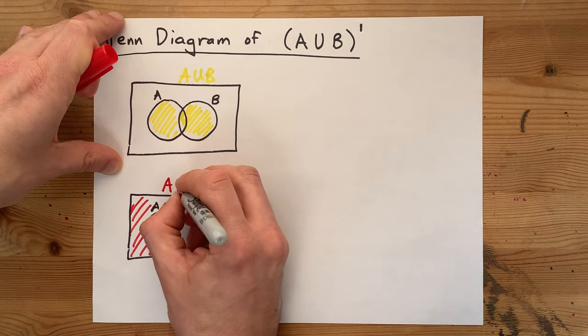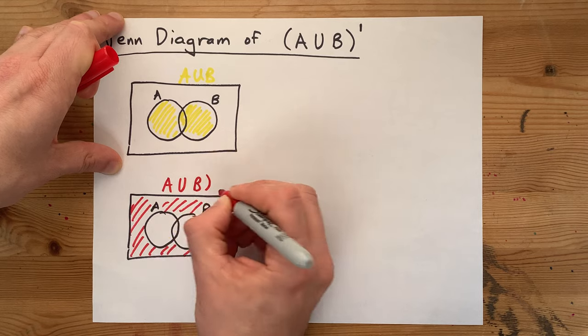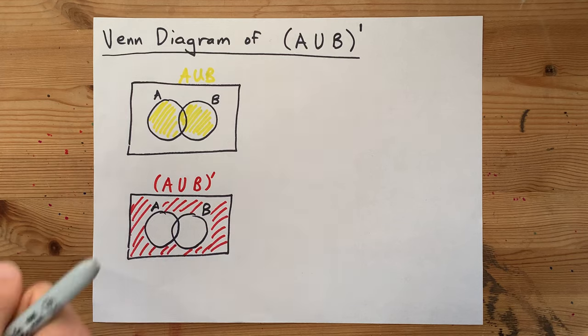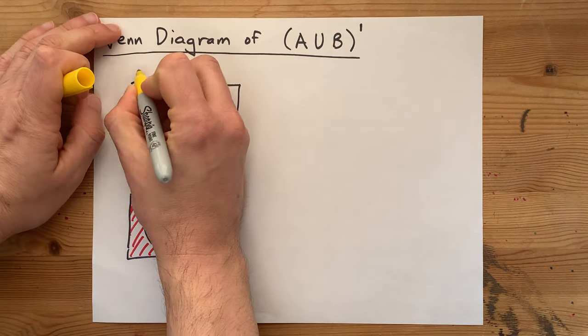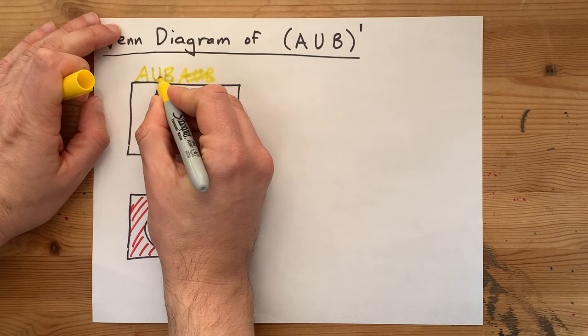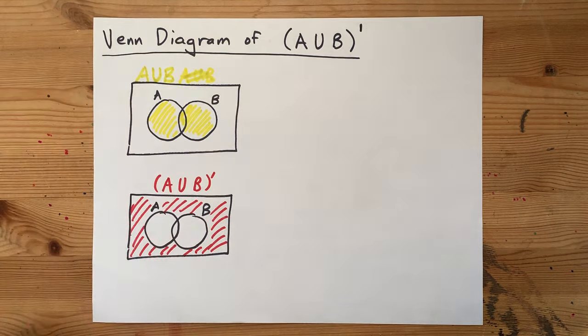And I'm going to call this A union B, but I have reversed it. So, I put the complement there. I wonder if anyone was going to call me on that. I used a U instead of union. There you go. You're not supposed to put that little thing on the U there. I like it.